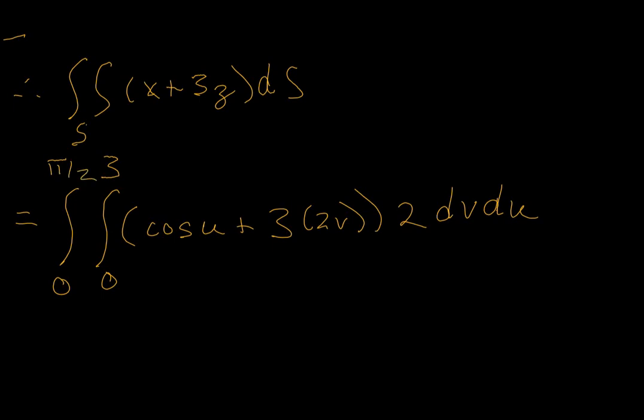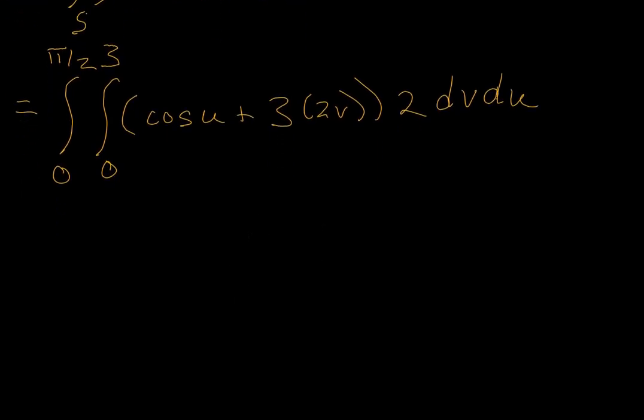All right, let's integrate. First antiderivative is going to be... What is it going to be here? So 2 times v cosine of u, plus 3v squared, and v is evaluated from 0 to 3, then we'll later integrate with respect to u.